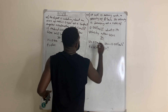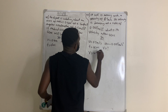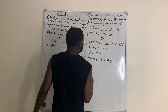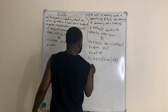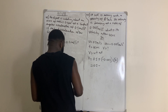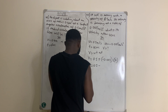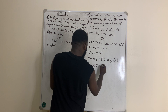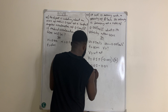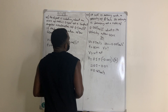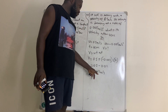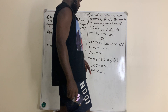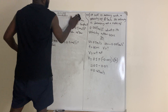We know that v = u + at. Substituting: v = 0.5 + (−0.005)(4) = 0.5 − 0.02 = 0.48 meters per second. The velocity was initially 0.5 but is now reduced to 0.48 m/s. This shows that deceleration is negative acceleration — that's why we use minus here.